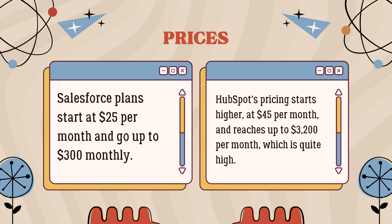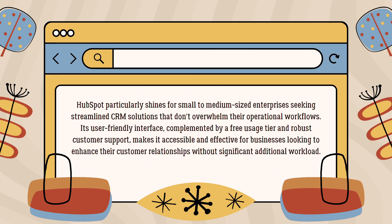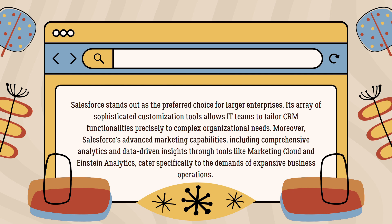Both HubSpot and Salesforce emerge as standout options when considering CRM software solutions. HubSpot particularly shines for small to medium-sized enterprises seeking streamlined CRM solutions that don't overwhelm their operational workflows. Its user-friendly interface, complemented by a free usage tier and robust customer support, makes it accessible and effective for businesses looking to enhance their customer relationships. On the other hand, Salesforce stands out as the preferred choice for larger enterprises, with sophisticated customization tools and comprehensive analytics through Marketing Cloud and Einstein Analytics, catering to complex organizational needs.